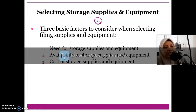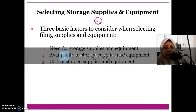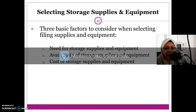Number one is the need for storage supply and equipment — you need to do a need analysis, which is 'keperluan.' You need to look into what the company's needs are. If your company deals with a large number of records, you might have several storage supplies and equipment that are suitable for that particular volume of records.